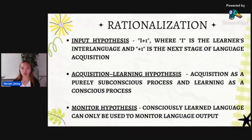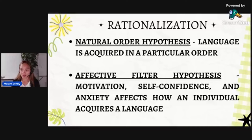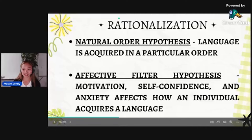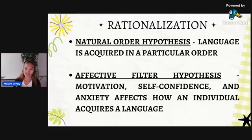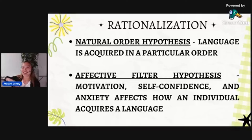Next is the natural order hypothesis. Language is acquired in a particular order. You first learn babbling and crying, then one-word utterances like 'mama,' 'papa,' 'drink,' 'eat,' 'hungry.' Slowly these grow into sentences and then complete sentences. That's the belief of the natural order hypothesis.